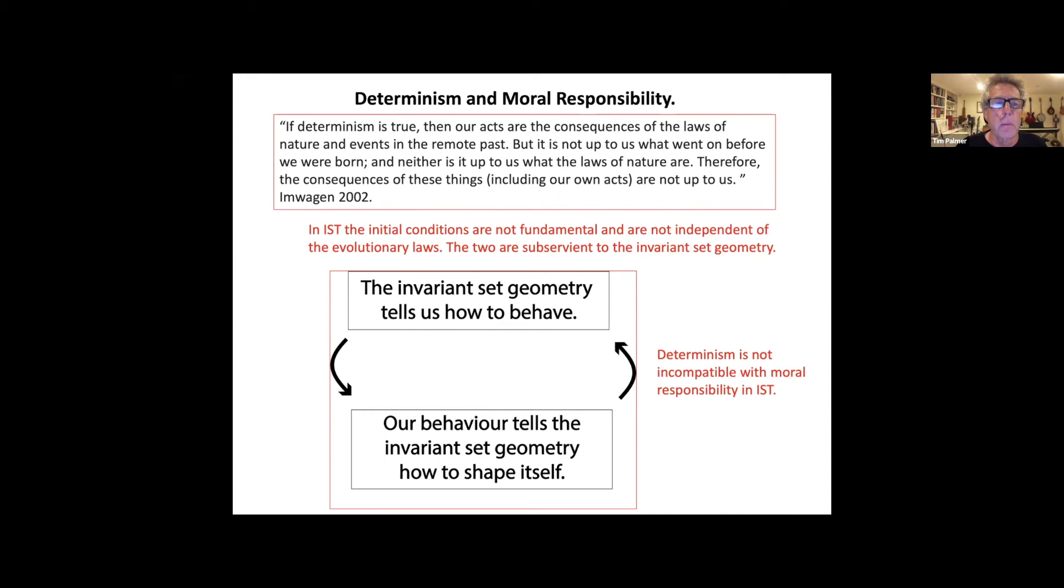The idea of moral responsibility is a standard quote from van Inwagen: if determinism is true then our acts are consequences of the laws of nature and events in the remote past. But it's not up to us what went on before we were born, and neither is it up to us what the laws of nature are. So that's the difficulty. If you believe in determinism, how can you believe in moral responsibility? Because everything that we did was determined at the time of the Big Bang.